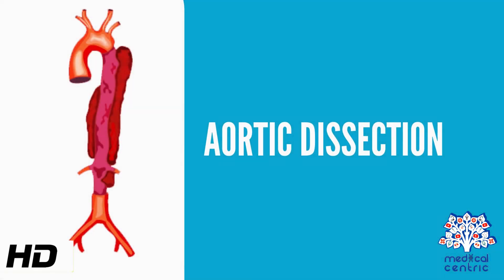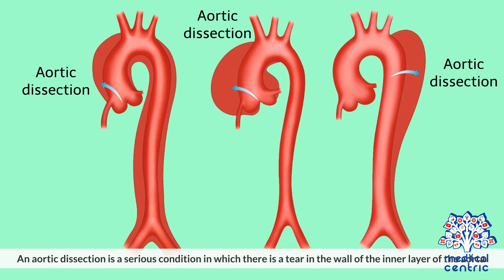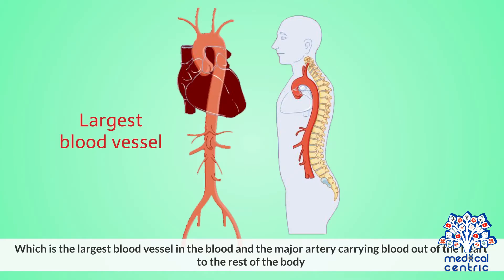Today's topic is aortic dissection. An aortic dissection is a serious condition in which there is a tear in the wall of the inner layer of the aorta, which is the largest blood vessel in the body, and the major artery carrying blood out of the heart to the rest of the body.